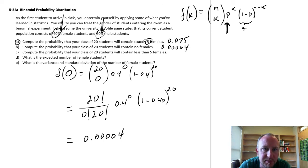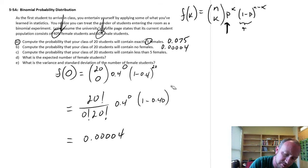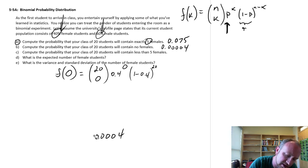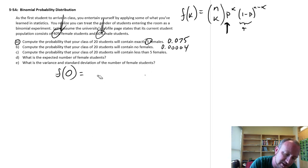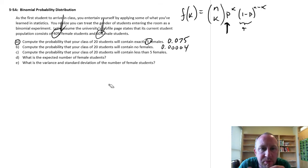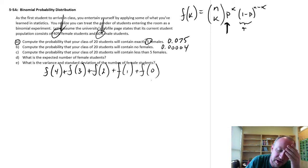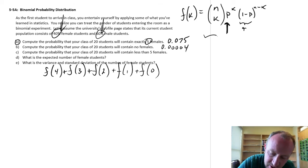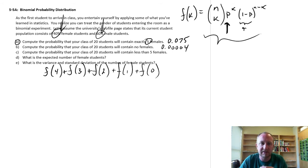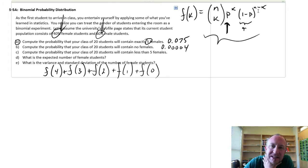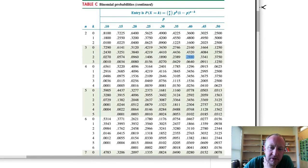Part C: compute the probability that your class of 20 students will contain less than 5 females. What we want is the probability of 4 plus the probability of 3, plus the probability of 2, 1, and 0. That's a lot of calculations — we'd have to do this calculation five times. So for this problem, let's use our binomial distribution table.